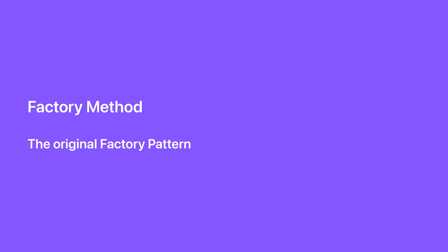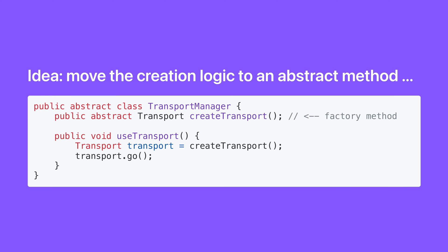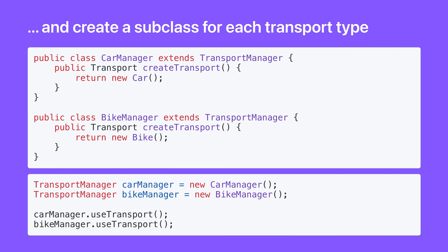Factory method — the original factory pattern from the Gang of Four. Here's the problem: the transport manager needs to create transport, but which type varies at runtime, which becomes unwieldy as the number of transport types grows. The idea is to move the creation logic to an abstract method and create a subclass for each transport type, so we have a specialized subclass for each transport.